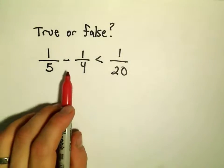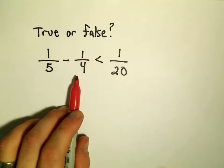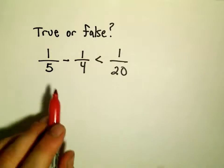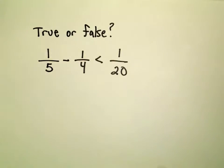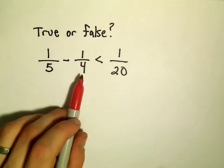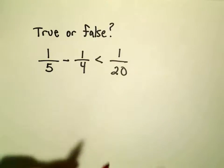And since we're subtracting fractions, remember we have to get common denominators. And in this case I'm thinking, what's the smallest number that both 5 and 4 would divide into evenly? And I think the smallest number that both 5 and 4 would divide into evenly would be 20.